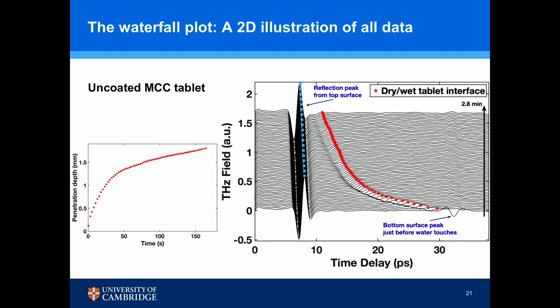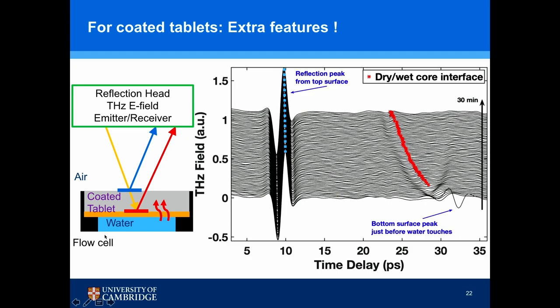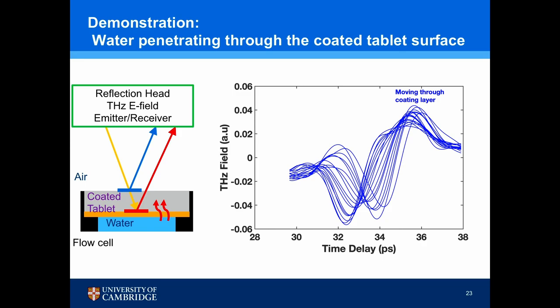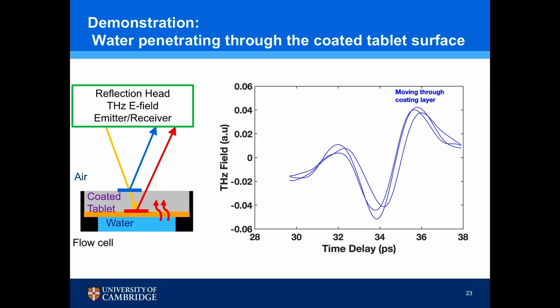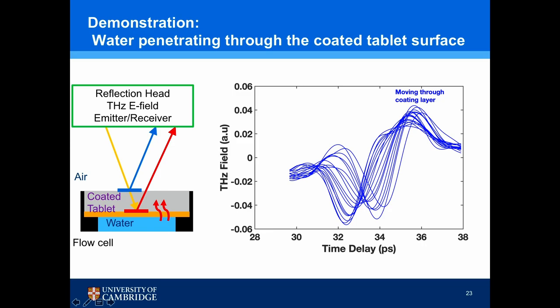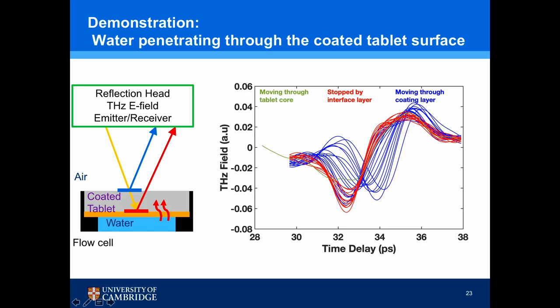Now let's look at the liquid transport data. Recalling the waterfall plot — for an uncoated MCC tablet, water travels throughout right from the beginning. But if we replace it with a coated tablet facing downwards, before coherent transport begins, there are more interesting features at the start due to the presence of the coating layer. Zooming in, just after water touches the coating layer, it first travels a bit, then stops at the interface and starts to decrease in amplitude. A new peak then emerges, traveling through the rest of the tablet — water traveling through the coating, stopping at the interface, dissolving it, then moving through the core.